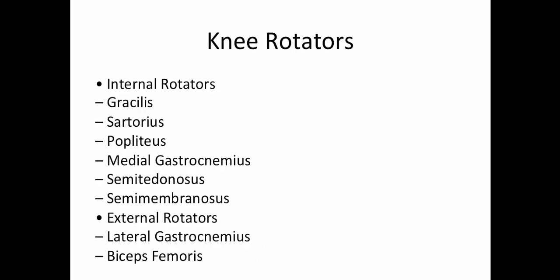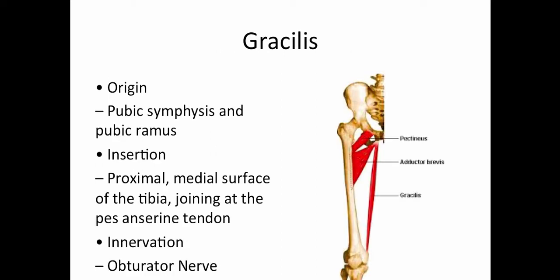The knee rotators include internal and external rotators. The internal rotators are the gracilis, sartorius, popliteus, medial gastrocnemius, semitendinosus, and semimembranosus. The external rotators are the lateral gastrocnemius and the biceps femoris. The gracilis originates on the pubic symphysis and pubic ramus and inserts on the proximal medial surface of the tibia, joining at the pes anserine tendon.